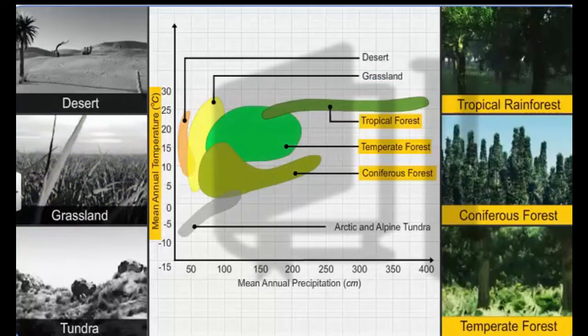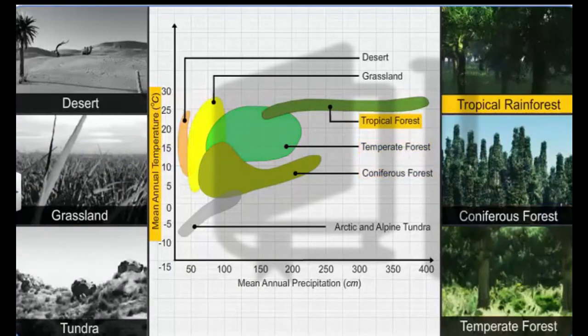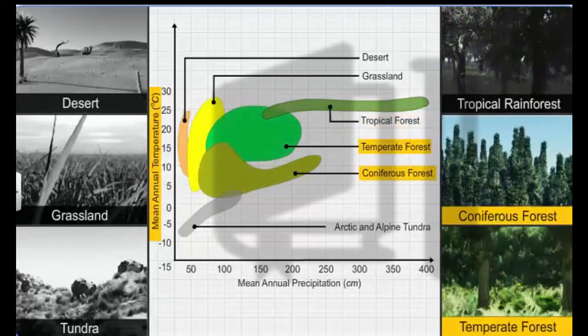The rainforests experience good rainfall throughout the year, though temperatures in the tropical rainforests are relatively higher than those in coniferous and temperate forests due to their proximity to the equator.